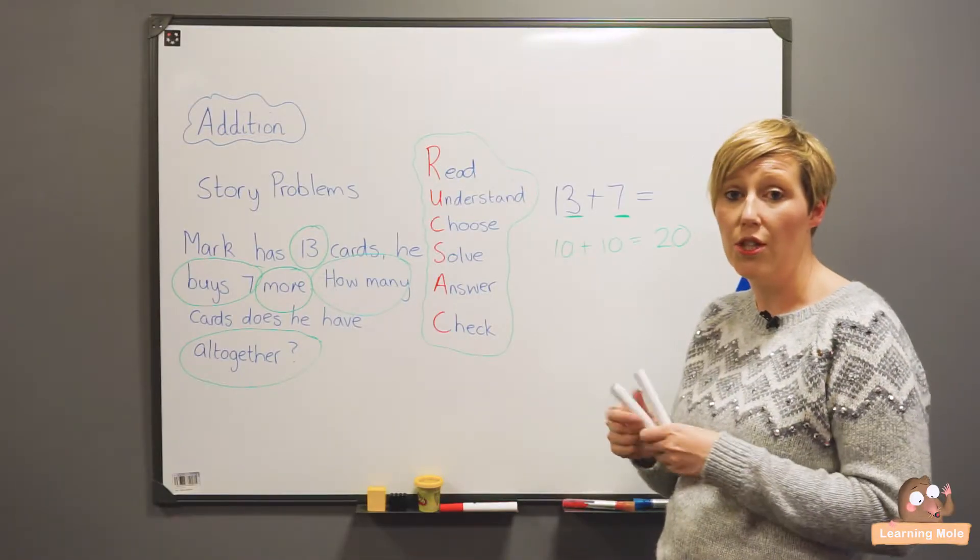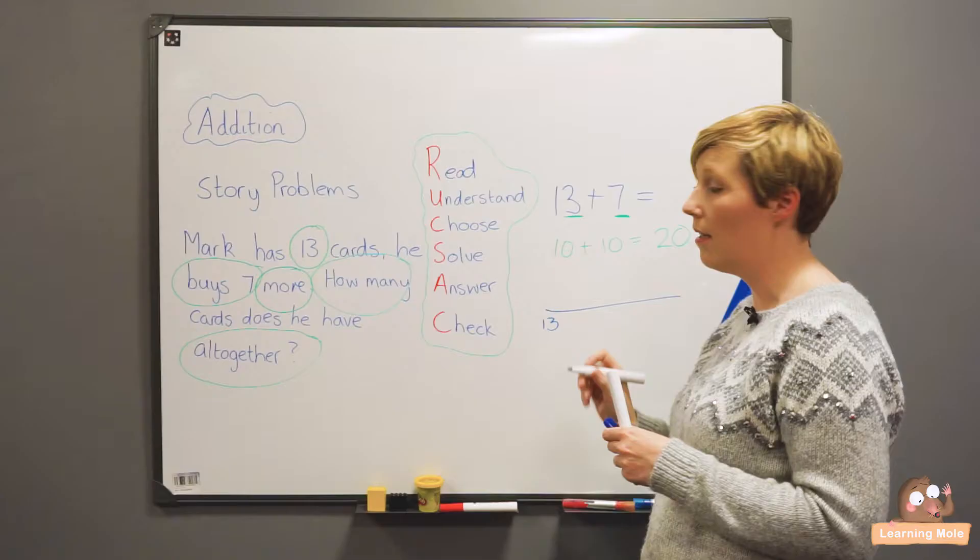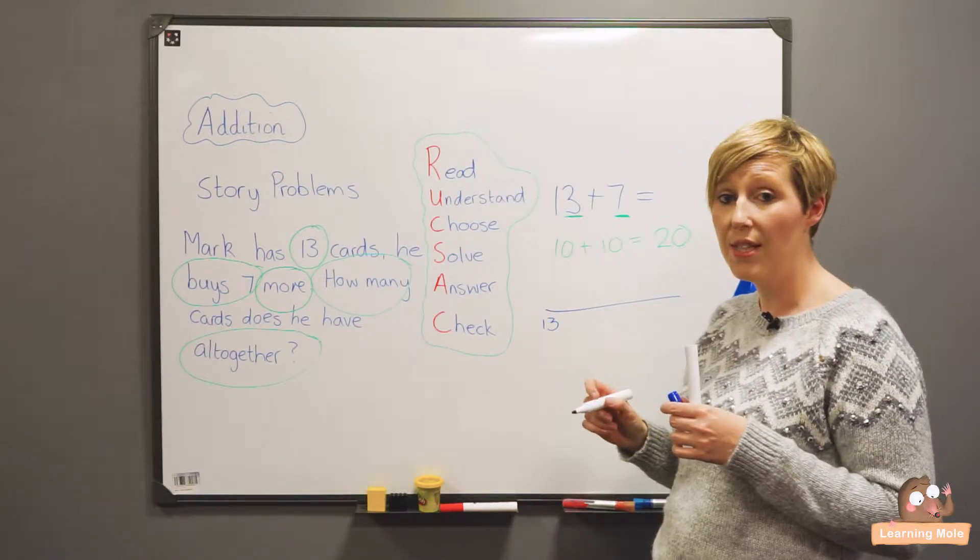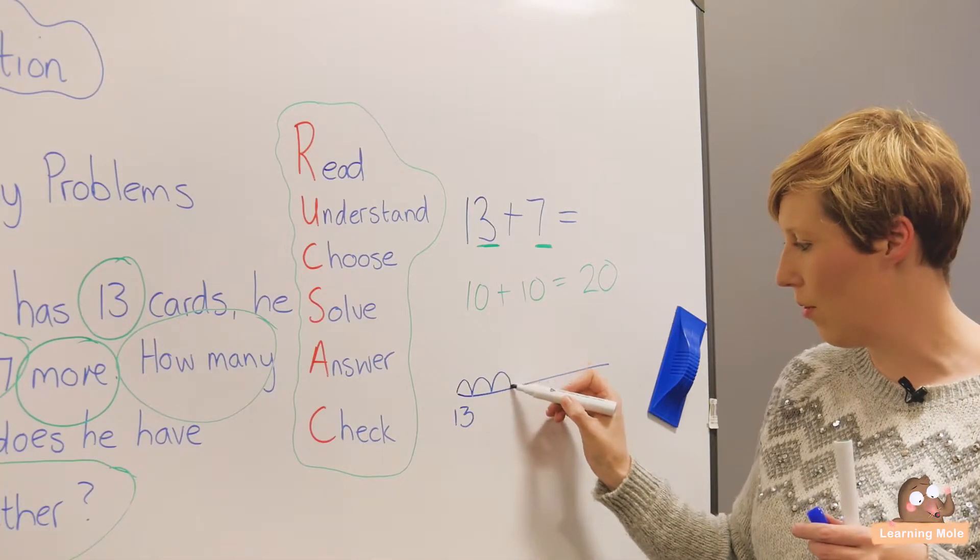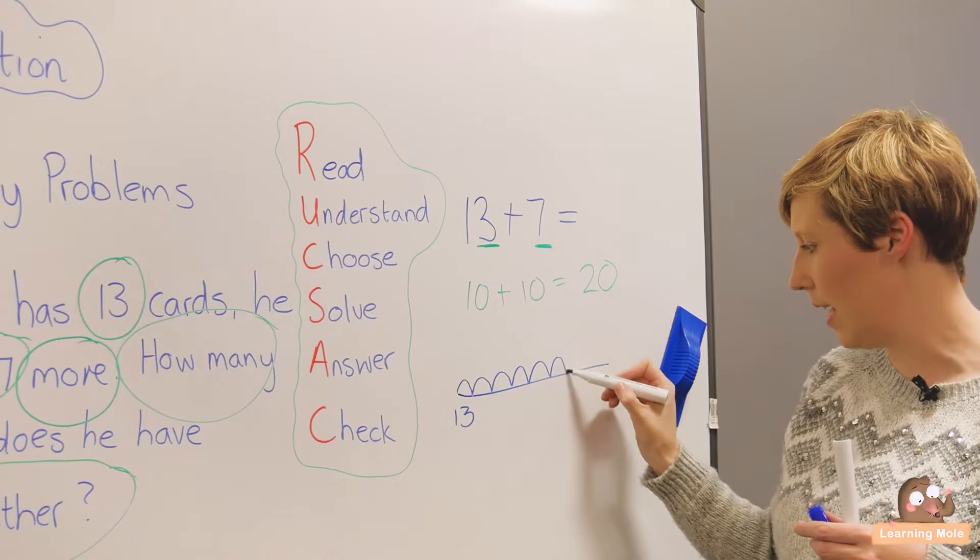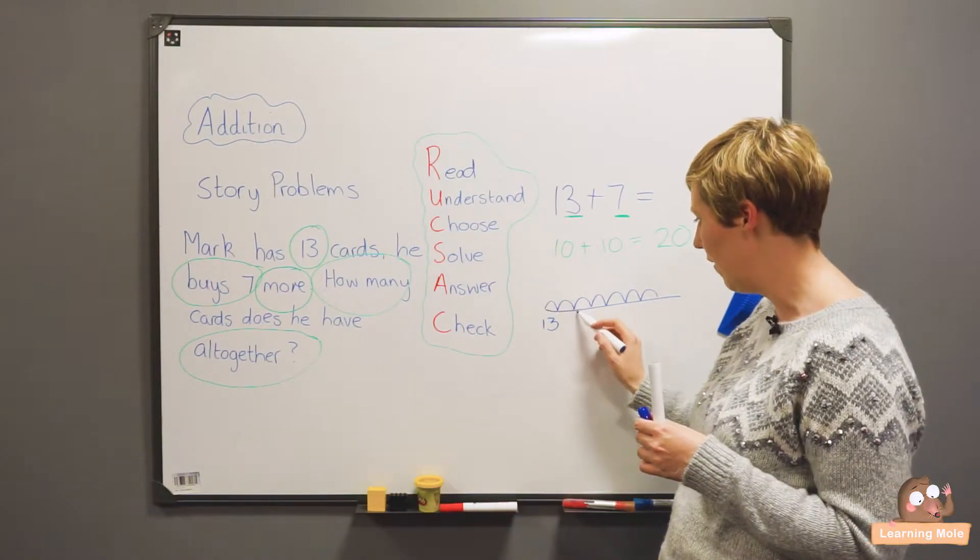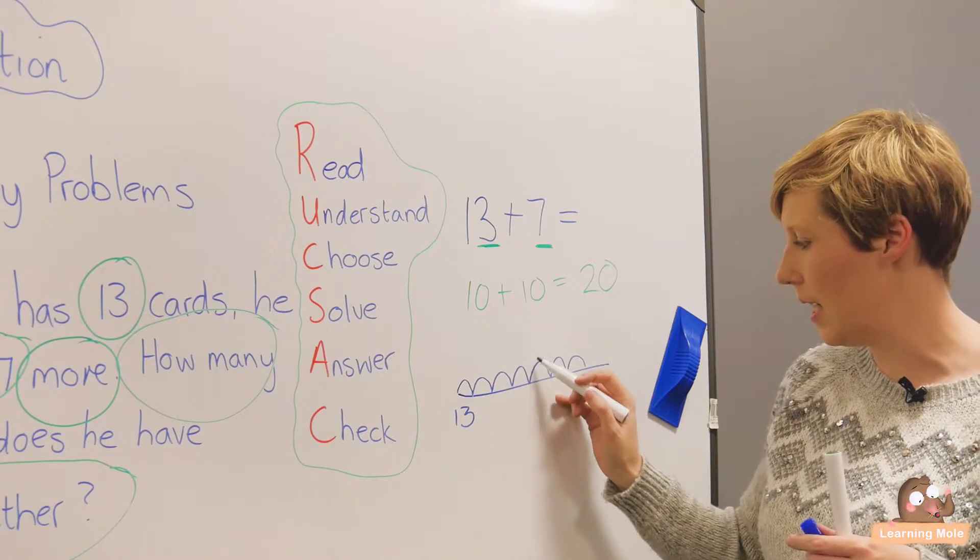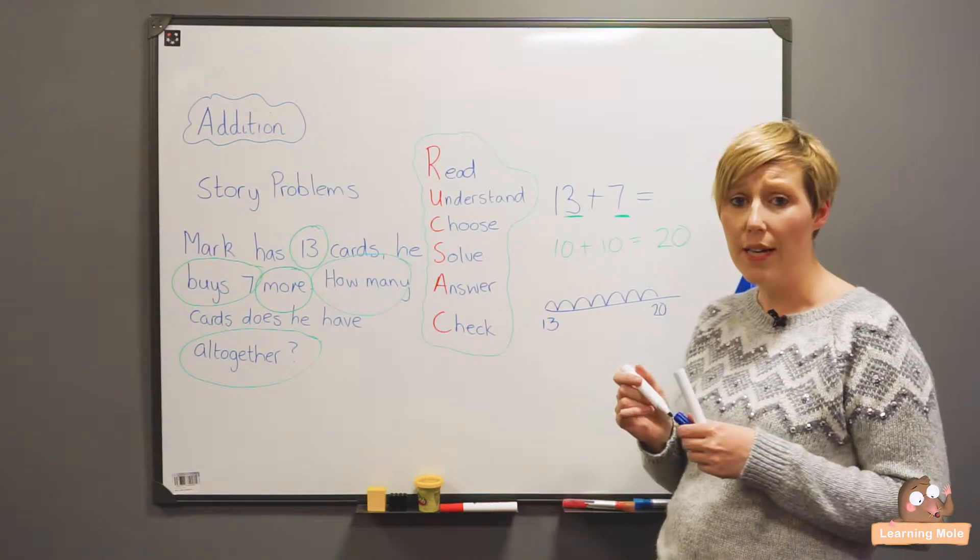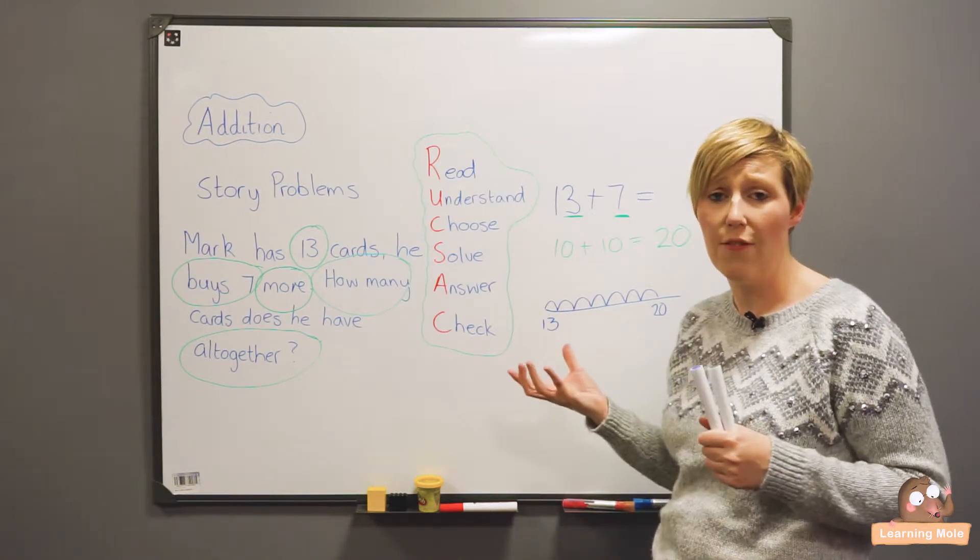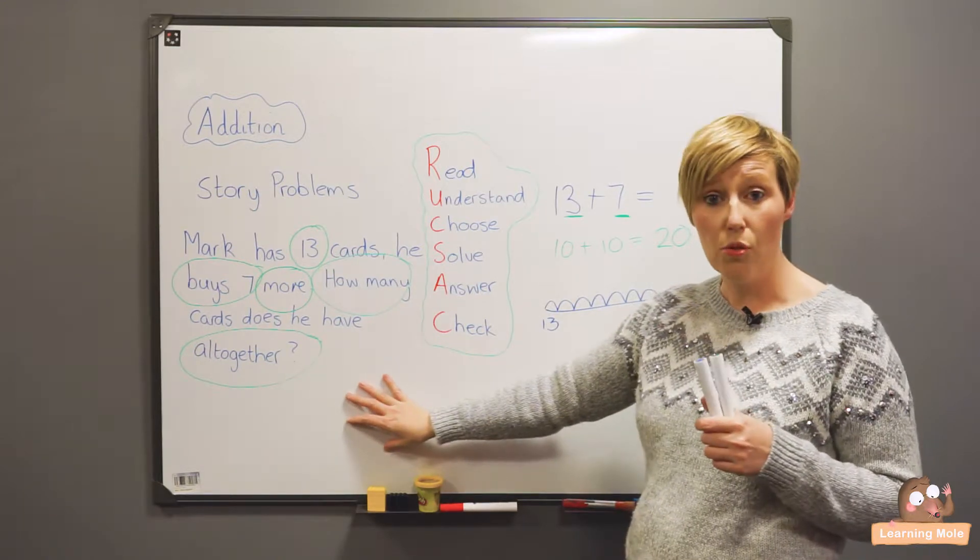Another child might want to use a number line. So they will draw their number line. They will put 13 at the beginning because they're going to draw a blank number line and then they're going to do their 7 jumps. They're going to do 13, 1, 2, 3, 4, 5, 6, 7 and then count on 13, 14, 15, 16, 17, 18, 19, 20. So do encourage your child to use whatever tools they feel is necessary in the beginning stages of solving story problems.